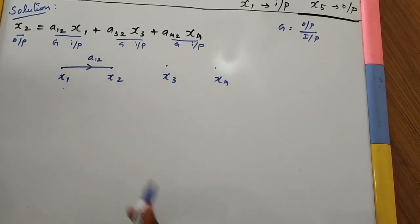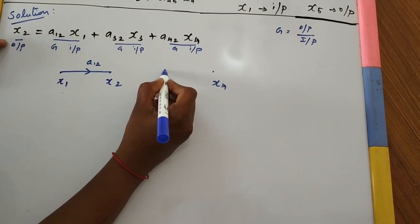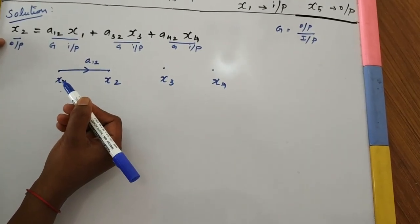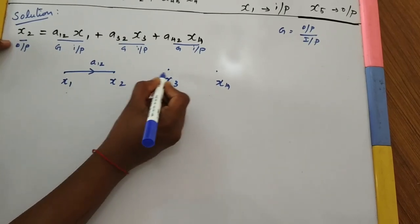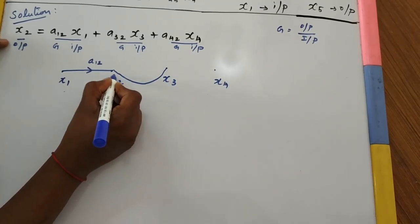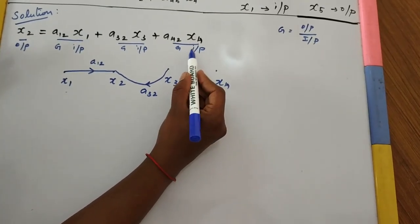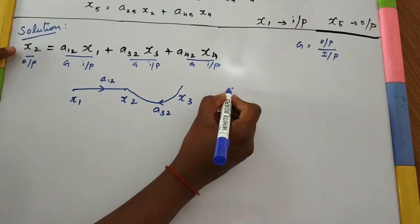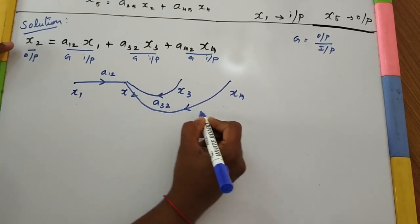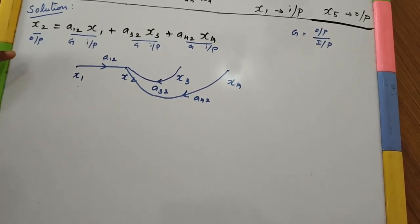This is with respect to the first term. For the second term, X3 node is the input node and X2 node is the output node. Since the flow is coming from a later node to a prior node, instead of taking it in reverse, we take the flow in this feedback path: from X3 node to X2 node with a gain value A32. For the third term, from X4 node to X2 node with a gain value A42. This is the required signal flow graph for equation 1.